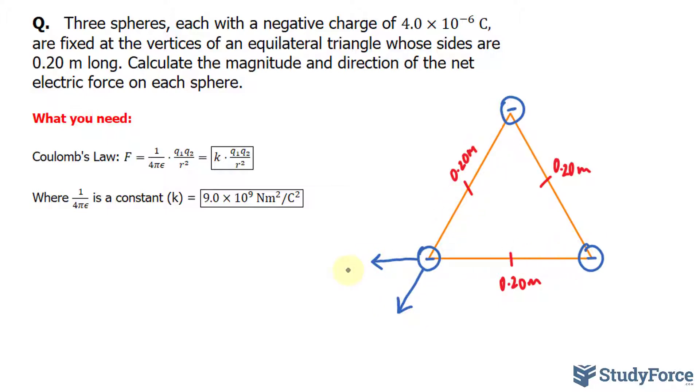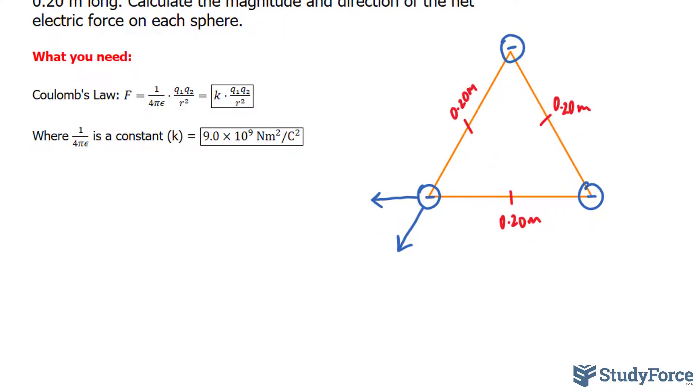To find out the force in which each of these are exerting onto this sphere, we only need to do one calculation using Coulomb's Law, since they're both the same distance and the same charge. So Coulomb's Law is shown right here, where we have F equals K, which is 9.0 times 10 to the power of 9 newtons times meters squared per Coulomb squared.